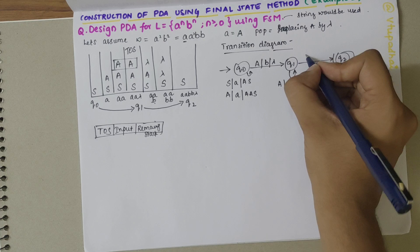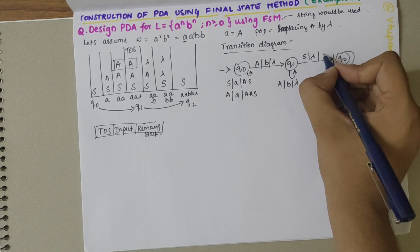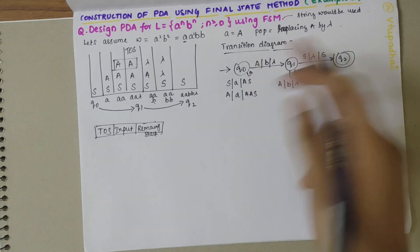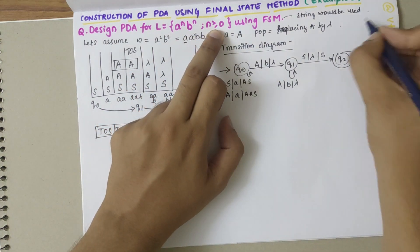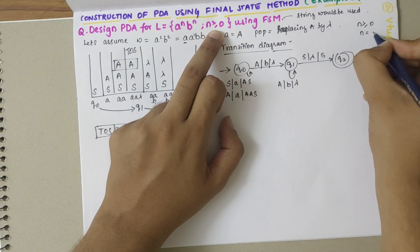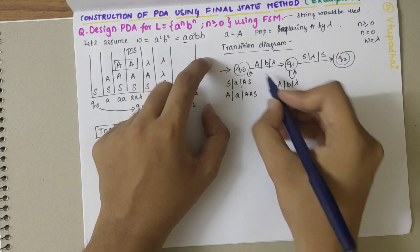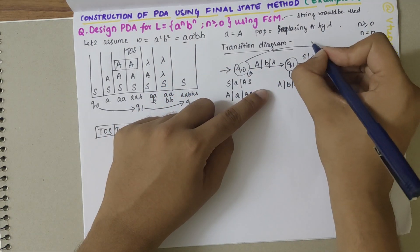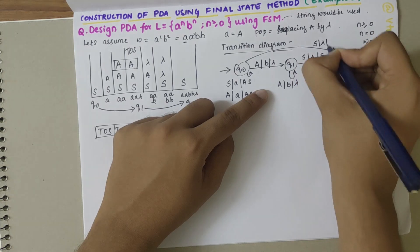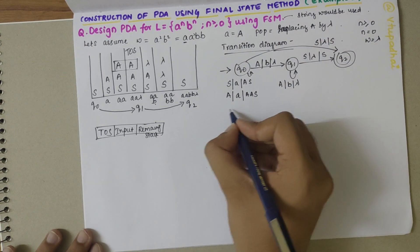The transition from q1 to q2 happens when S is on top of stack, with lambda as input and S retained. Also, since n is greater than or equal to zero, when n equals zero the string would be lambda, so there's a direct transition from q0 to q2 when we have S, lambda, S — meaning when the input is lambda. That completes the transition diagram.